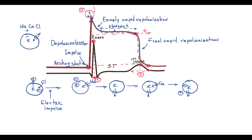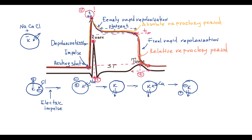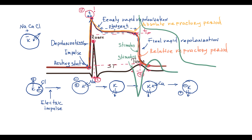During depolarization, early rapid repolarization, and the plateau phase, myocardial cells are in the absolute refractory period, meaning no stimulus regardless of intensity can trigger a new action potential. Final rapid repolarization is characterized by a relative refractory period, in which a strong stimulus can trigger a new action potential. This means the T wave represents a vulnerable phase in the cardiac cycle — strong electrical stimulation during this phase can evoke premature depolarization, depicted on ECG as a premature ventricular beat, which can potentially lead to life-threatening ventricular arrhythmias. This is a clinically important concept.